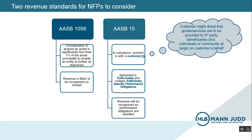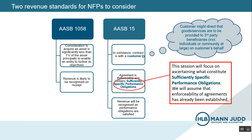The second point is that the contract needs to be enforceable. And finally, the contract needs to contain sufficiently specific performance obligations. For this session, because I intend to drill down into the concept of sufficiently specific performance obligations only, I won't be covering identifying when a contract with a customer exists or whether such a contract is deemed enforceable. In the examples I'll run through later, it's assumed that both of these factors have already been confirmed.